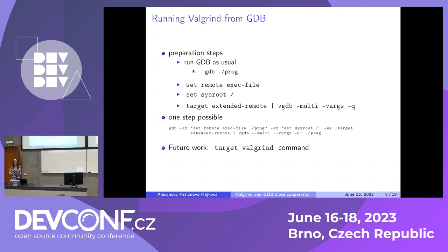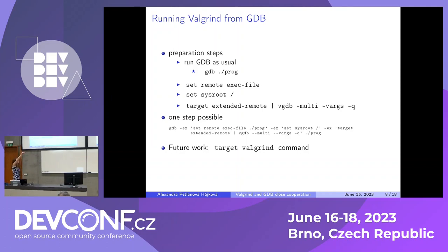So how do you actually run Valgrind from inside GDB? First, you run GDB as usual. Then you need to perform these preparational steps: set remote exec-file to your debug program, then set the sysroot to slash — because this uses the remote protocol but we are debugging locally. The command 'target extended-remote | vgdb' is the command that will launch Valgrind. The arguments shown are passed to Valgrind; here we use --quiet because we don't want Valgrind to output too much.